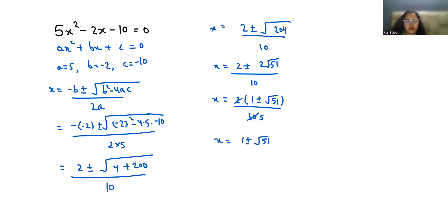Therefore, the two roots of x are: x₁ = (1 + √51) / 5 and x₂ = (1 - √51) / 5.